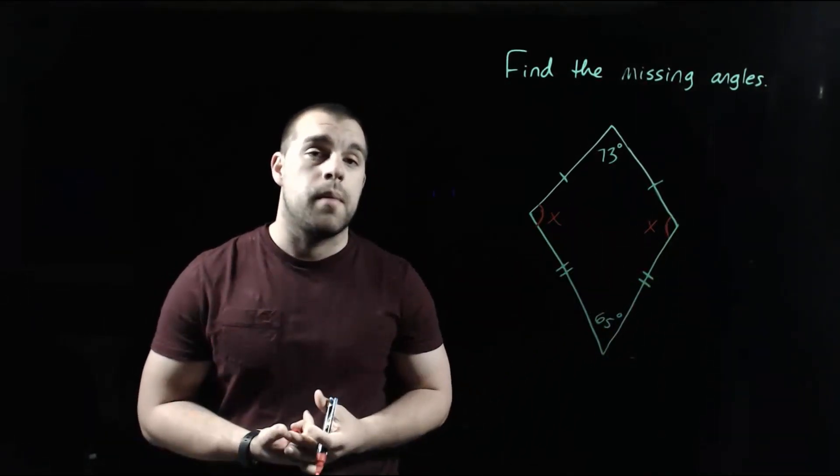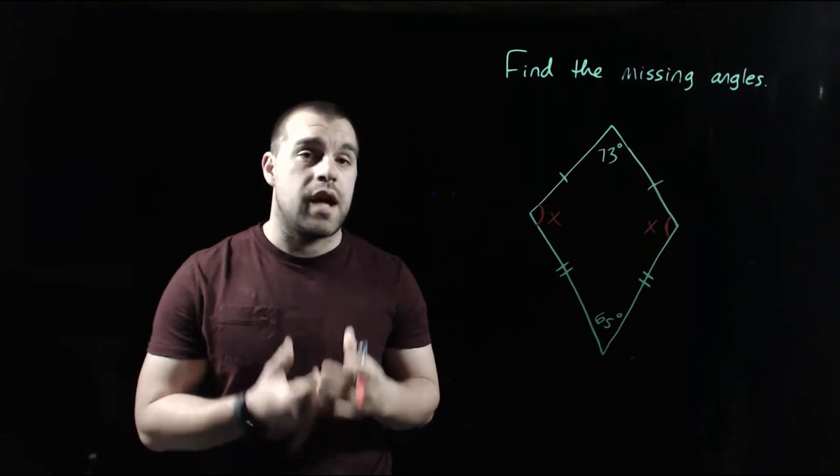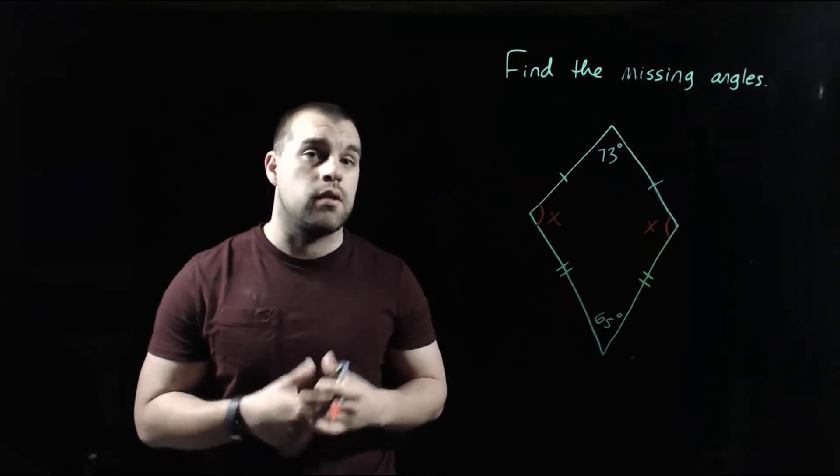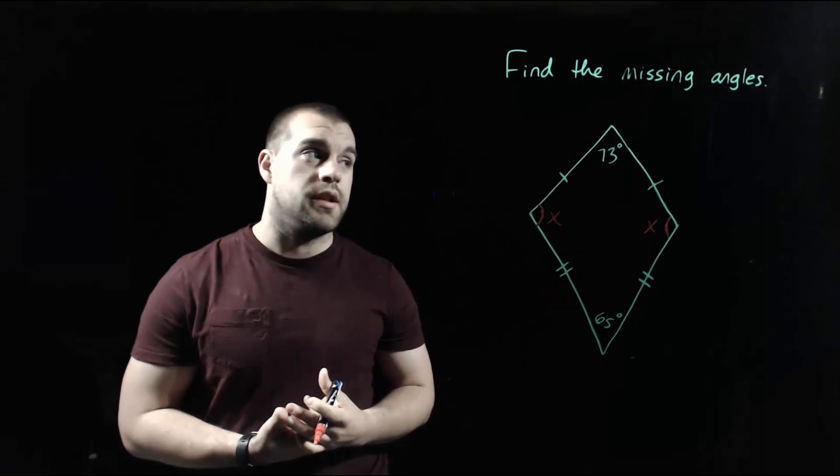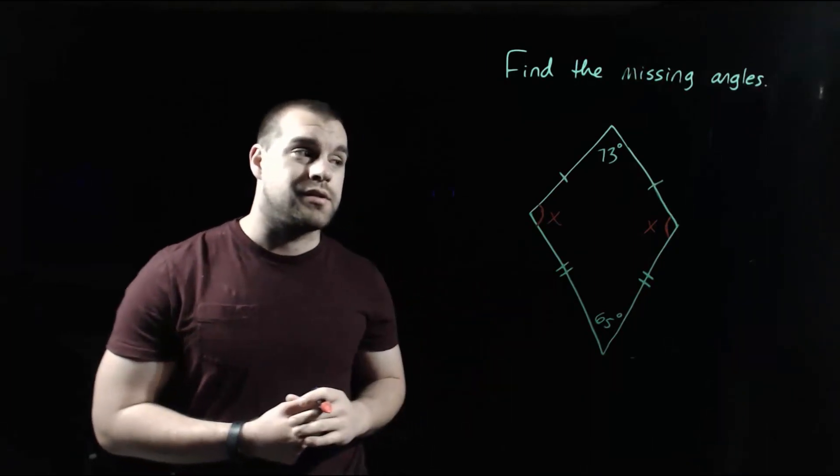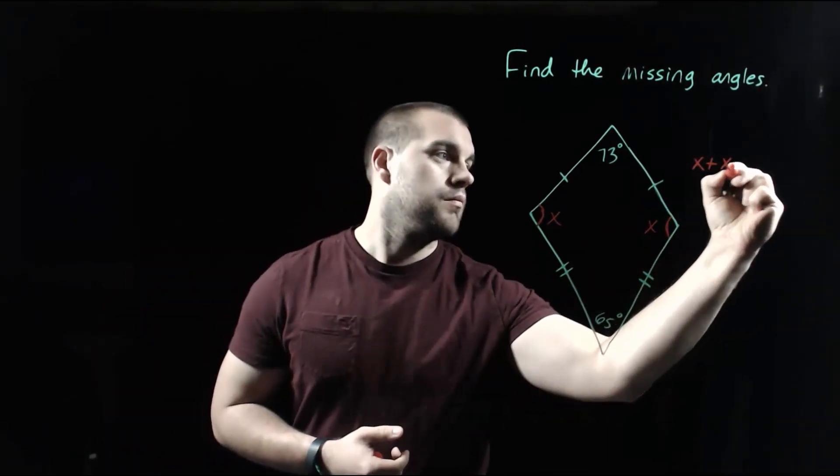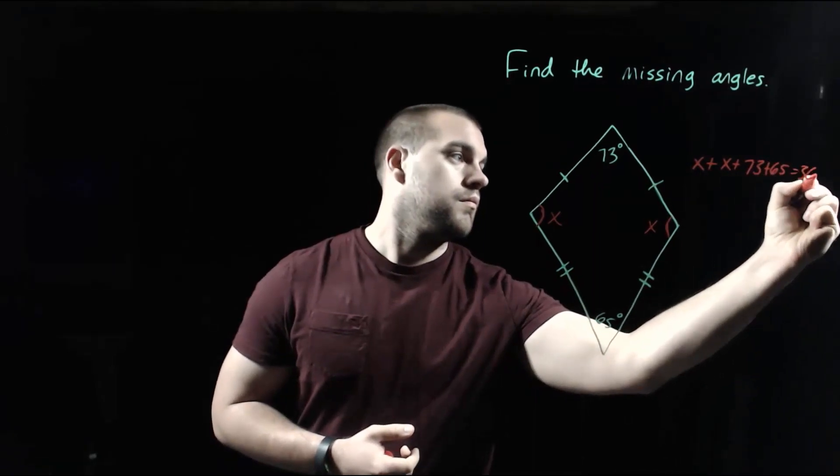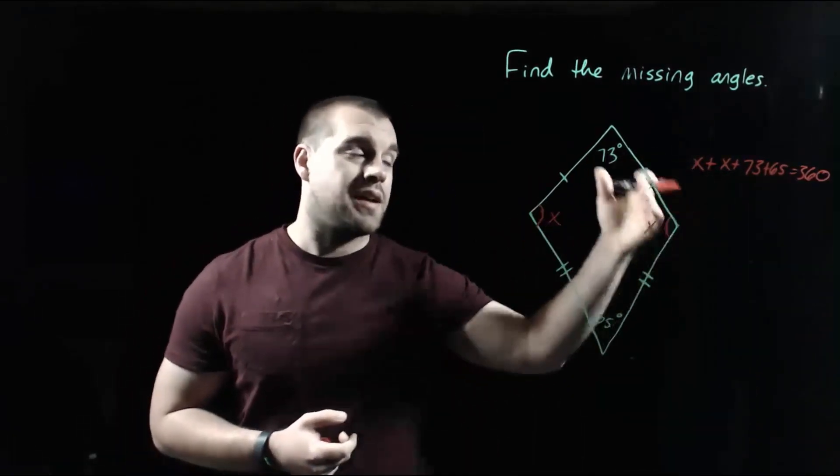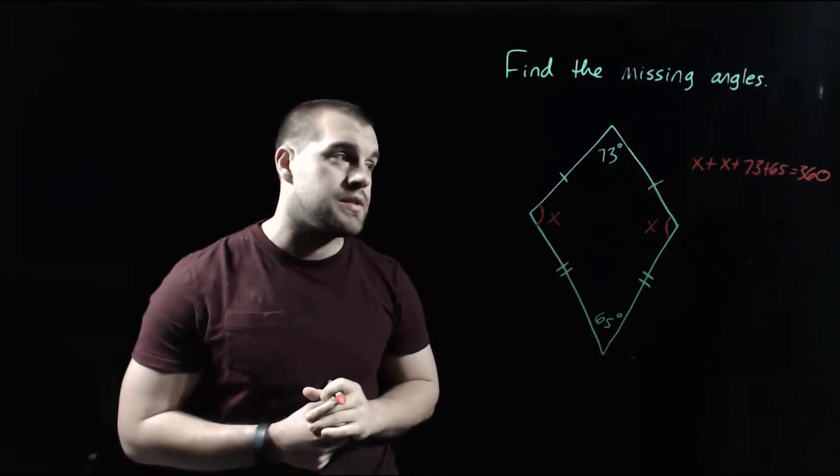And then if we use what we know about a quadrilateral, those angles inside of a quadrilateral have to add up to 360 degrees. So I'm going to start adding these angles together. So we get x plus x plus 73 plus 63 equals 360.